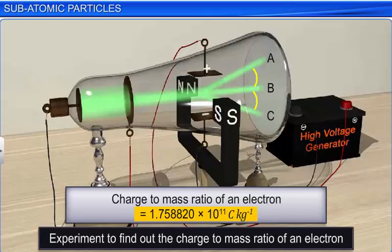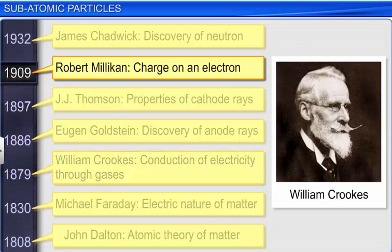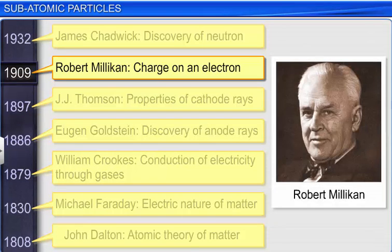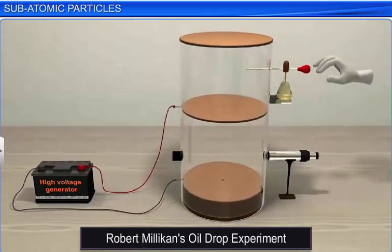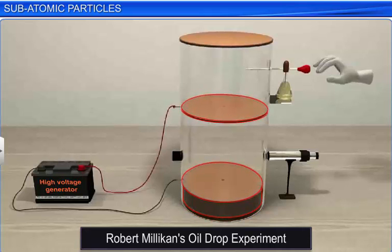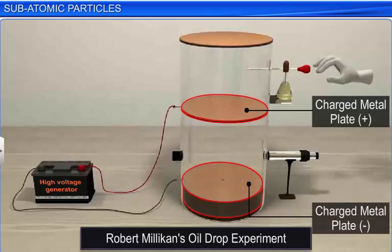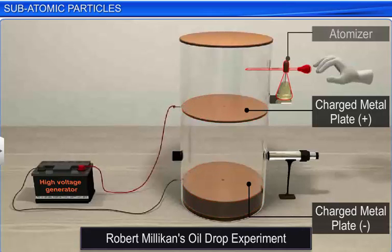The charge and mass of the electron remained unknown until another scientist, Robert Millikan, devised a method to calculate them in 1909. To calculate the charge of an electron, Millikan conducted the famous oil drop experiment using an apparatus consisting of a transparent electrical condenser with one metal plate at the top and one at the bottom of the chamber, plates connected to a battery such that the upper plate is positively charged and the lower plate is negatively charged.